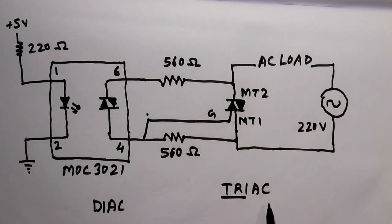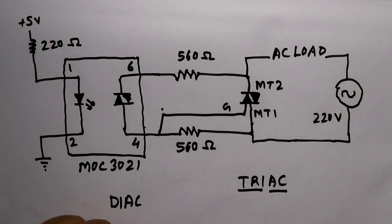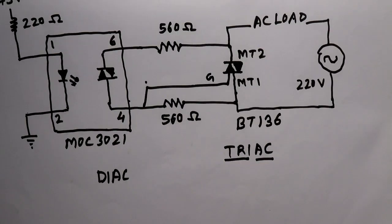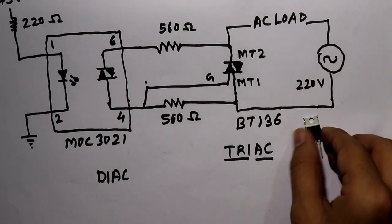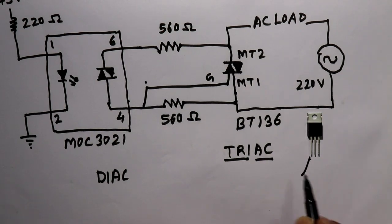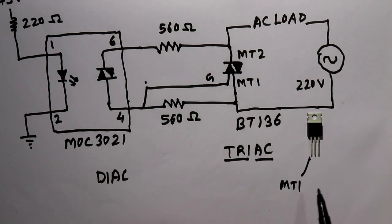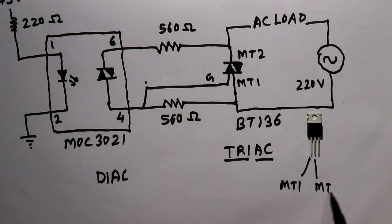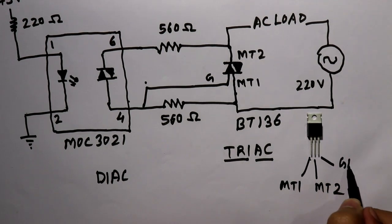And I am using here BT 136. Now let's see its pin diagram. The first pin is MT1, that is main terminal 1, the middle pin is main terminal 2, and the third one is gate pin.